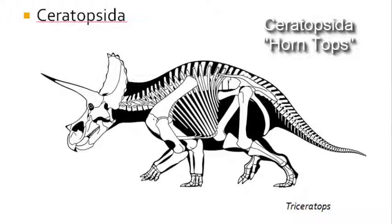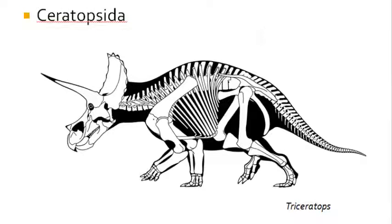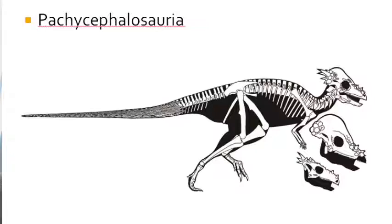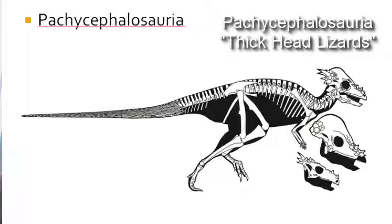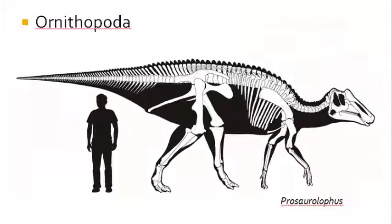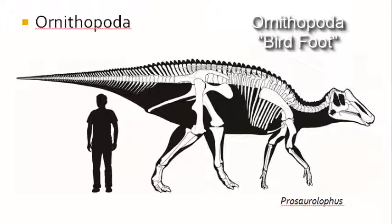Then we have the Marginocephala, the margin heads, which is divided into the Ceratopsia — the horn tops, which includes dinosaurs like Triceratops — and the Pachycephalosauria, the thick headed lizards. Finally we have the Ornithopoda, the bird feet dinosaurs, which in my youth we called the duck billed dinosaurs, or hadrosaur dinosaurs, and they are a very successful group that we will discuss in later videos.